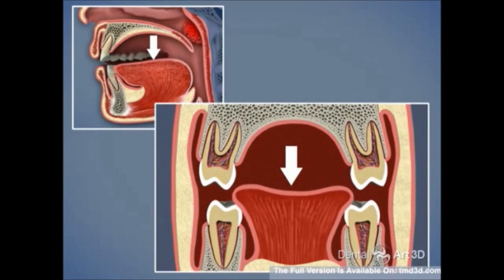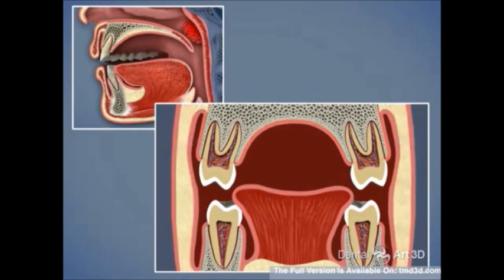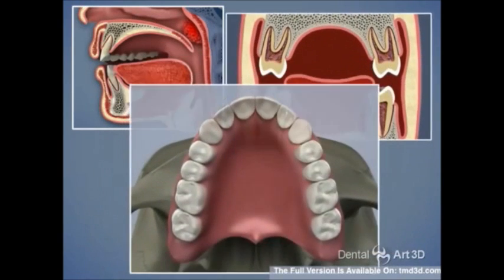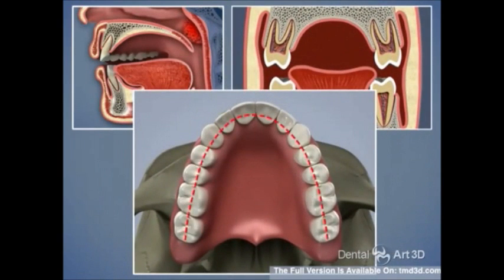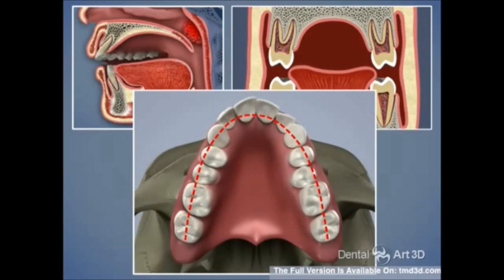Nasal breathing is the correct way for air to enter the body. During nasal breathing, the tongue rests at the palate and the pressure of the cheeks is balanced by the tongue. During mouth breathing, the pressure from the cheeks is unopposed by the tongue, the oral system becomes unbalanced, and results in the deformation of the upper jaw.